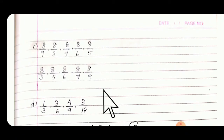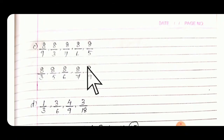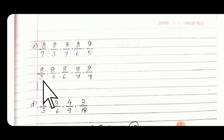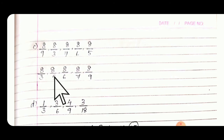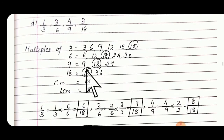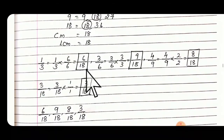See C — all the numerators are same and denominators are different. So you can do it directly because numerators are same. The denominator with the smallest value has the greater part. So the descending order is 8/3, 5, 6, 7 and 9. Then D: different numerator and different denominators, so convert into like fractions first and then arrange.